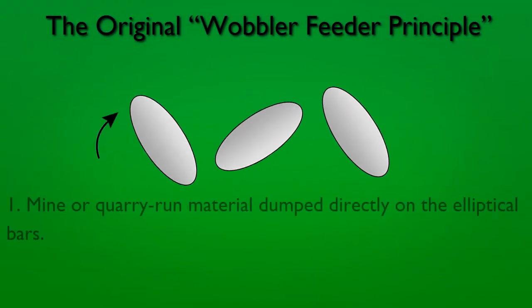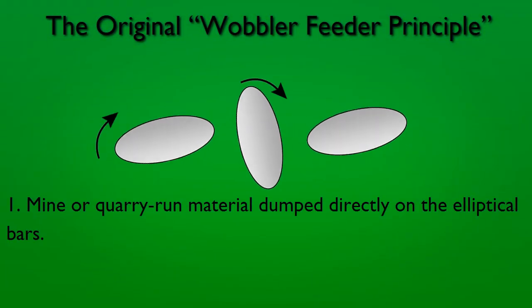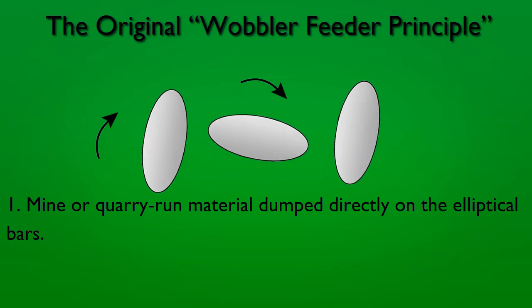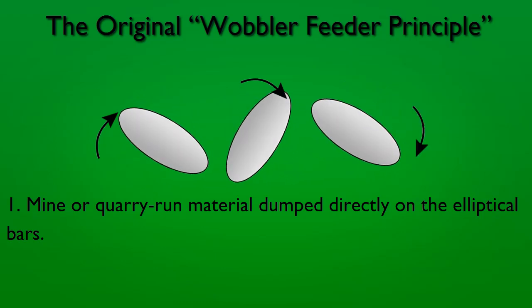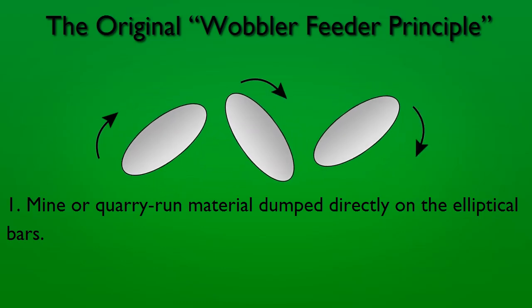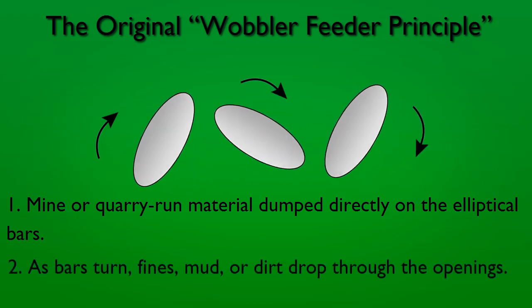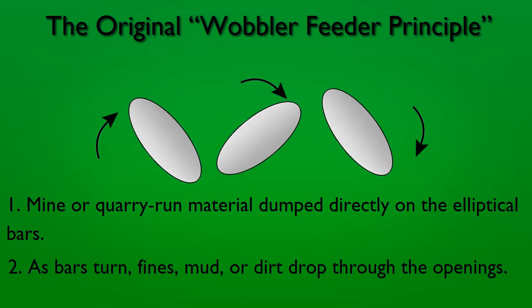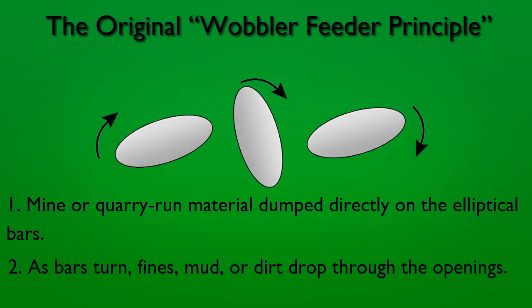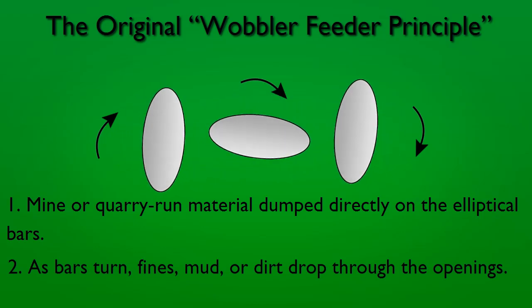The original wobbler feeder principle: mine or quarry run material is dumped directly on the elliptical bars. As the bars turn, fines, mud, or dirt drop through the openings.